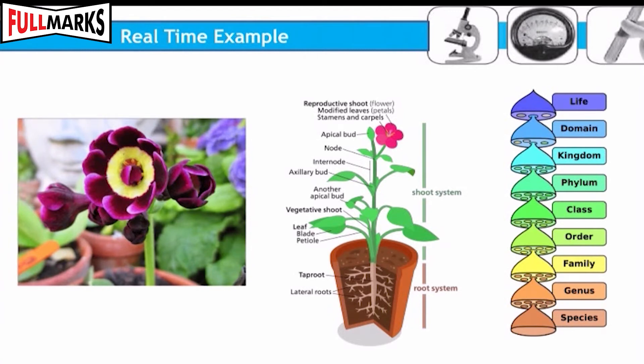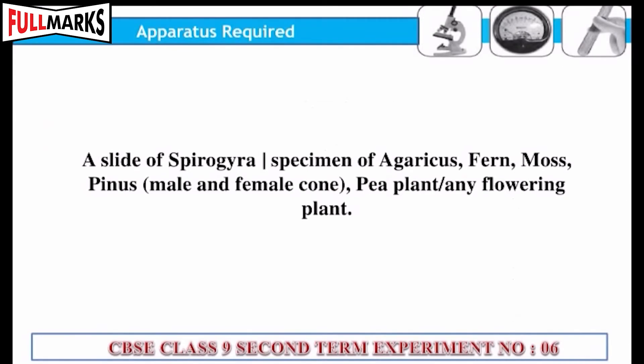This experiment helps us to study the classification of plants such as kingdom, division, class, and phylum. Apparatus required: a slide of Spirogyra, specimen of Agaricus, fern, moss, Pinus, and a pea plant or any flowering plant.